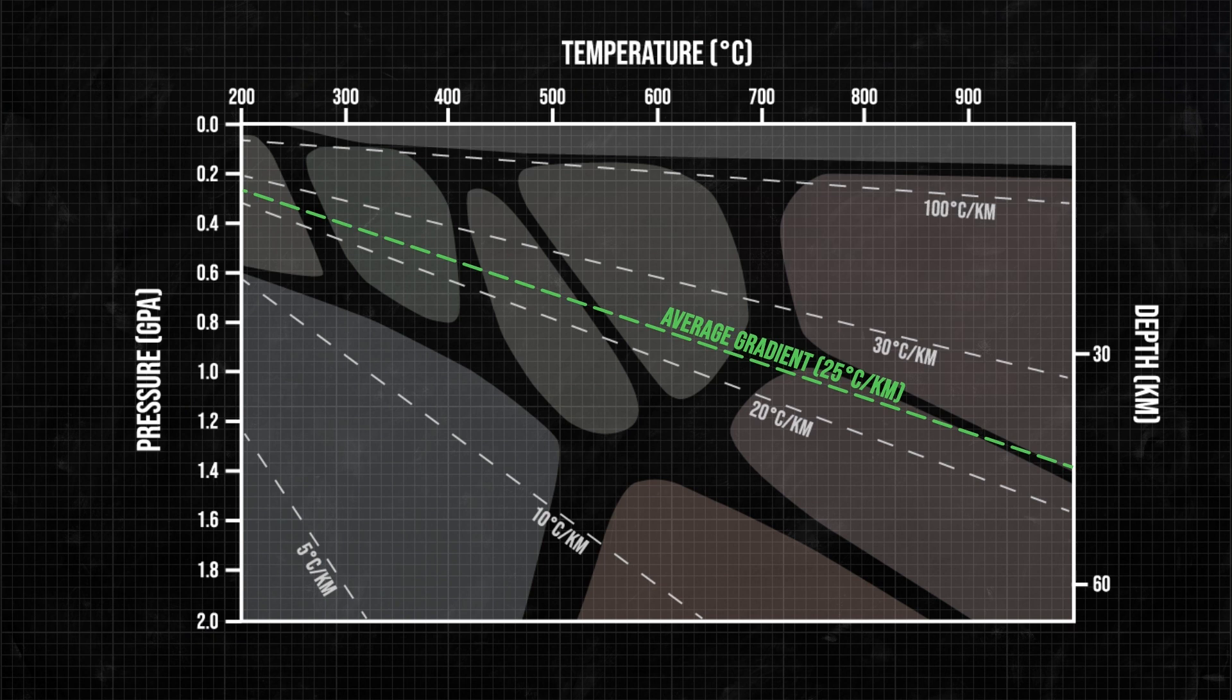For example, high geothermal gradients are found in regions with a lot of igneous activity, like a rift or on a spreading ridge or around volcanoes in an island arc. Low geothermal gradients tell you that cold materials are sinking.